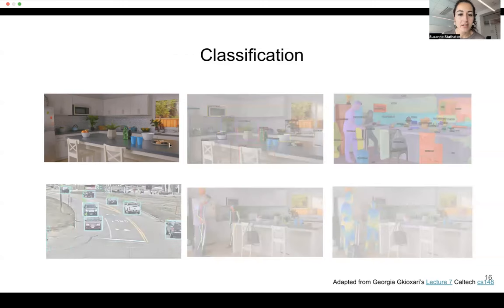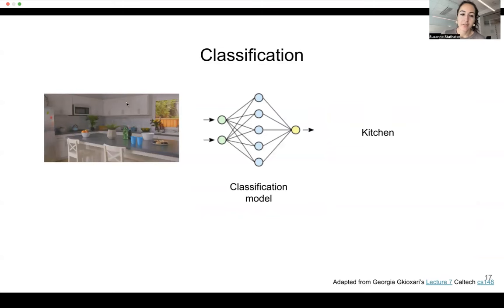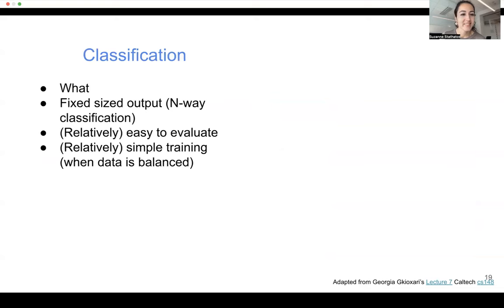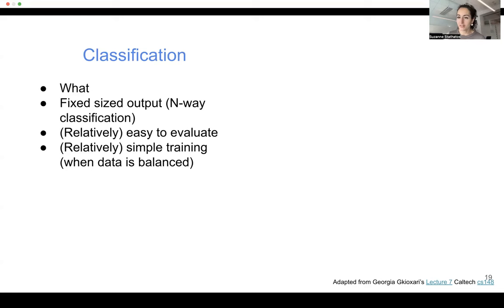Let's focus on classification first. You feed an image into a defined classification model and it outputs a description of what that is. It describes what the image is given usually a fixed-size input — it can be any of N classes, where N could be a dog, a cat, a human, an M&M, a kitchen. On the order of computer vision tasks, classification is relatively easy to evaluate, although several problems are still very hard. It's simple to train when the data is balanced.